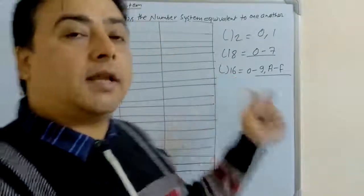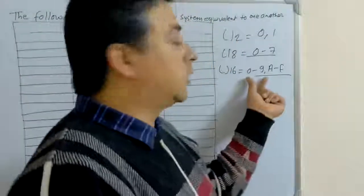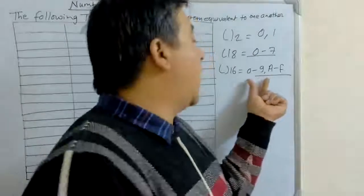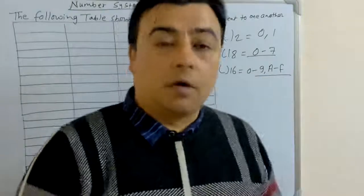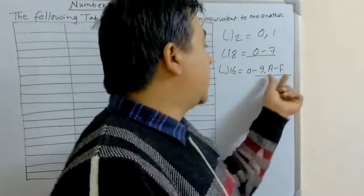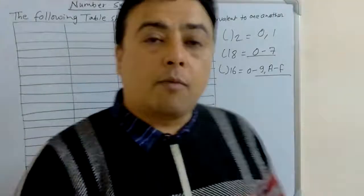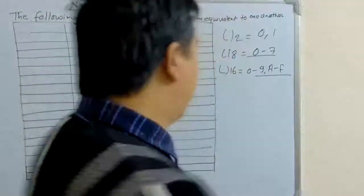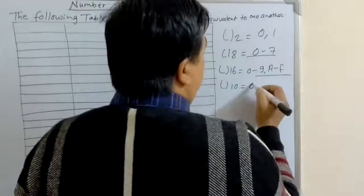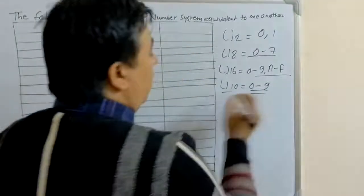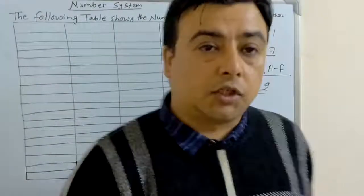Base 16 represents the hexadecimal number system, which includes alphanumeric values — meaning 0 to 9 as numbers as well as A to F as alphabets, so it contains both numbers and alphabets. If the base is 10, that means digits 0 to 9, this number system represents the decimal number system.